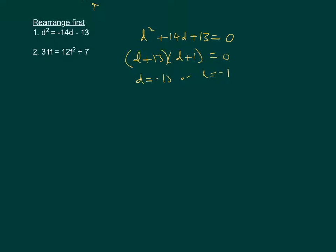And then last one, I want to get all the terms on one side of the equation. I like to try and keep the squared term positive where possible, so I'm going to move this term, take away 31f from both sides so that this side becomes 0. So we'll have 0 equals 12f squared minus 31f plus 7.